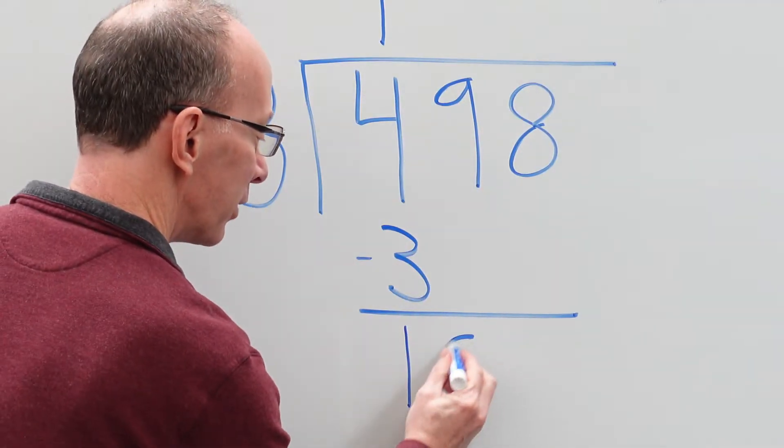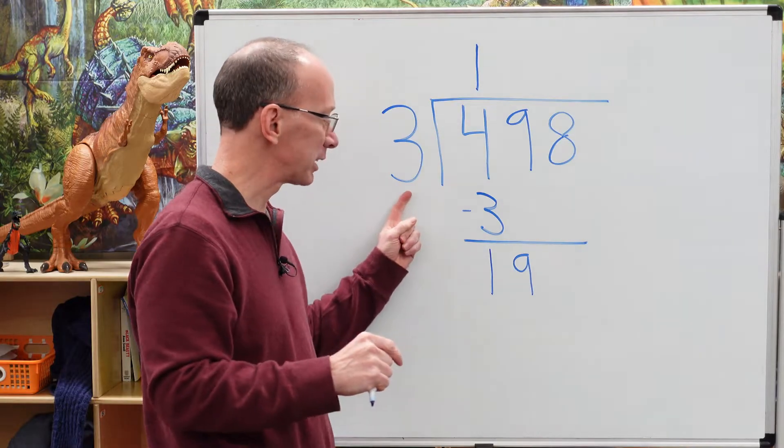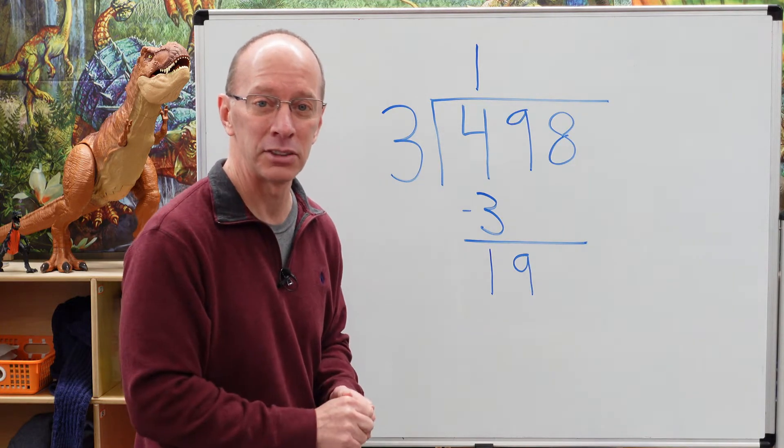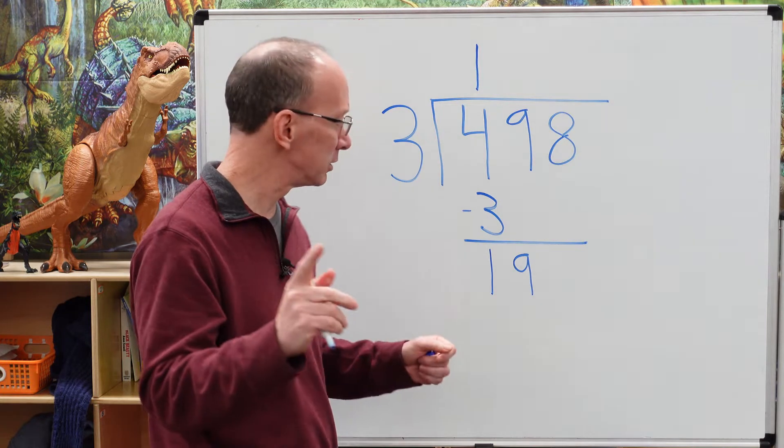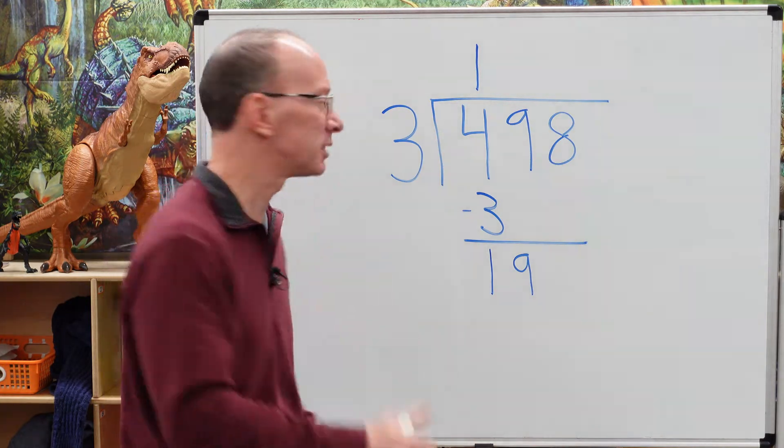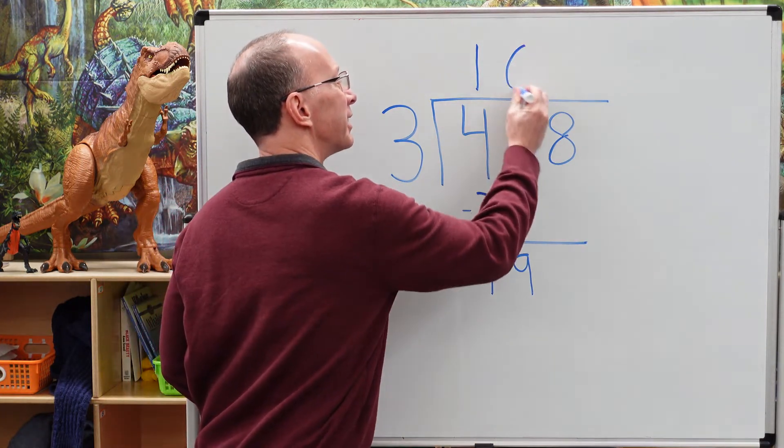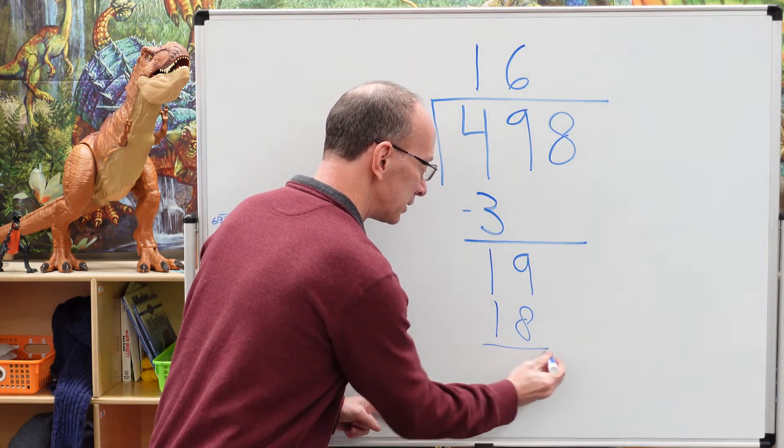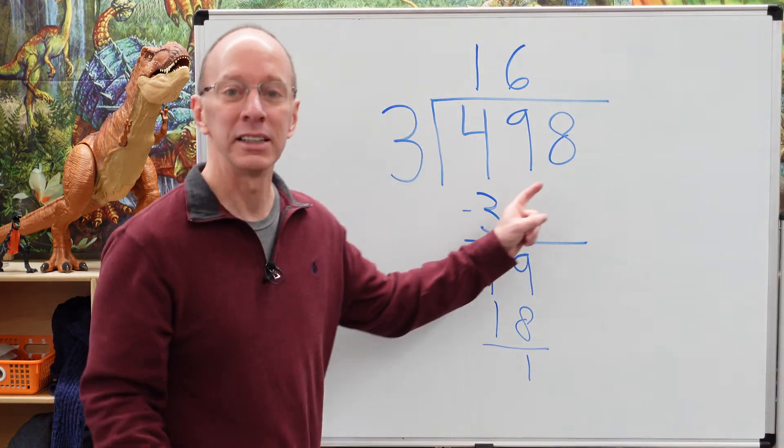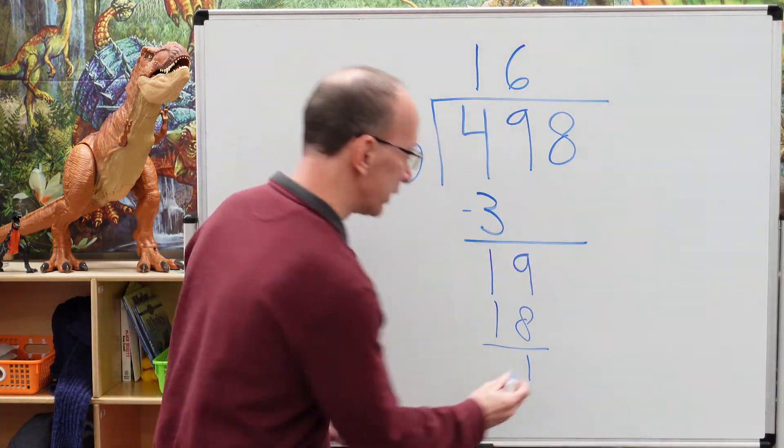Put that nine down here. So how many times can I put three into 19? Let me see. Three times five is 15, three times six is 18, three times seven is 21. Too high. We're going to stay with six. So we put six right here. Six times three is 18. Subtract it. Bring the next number down.